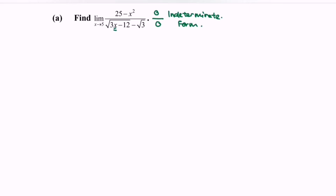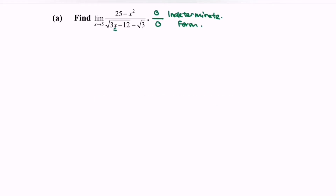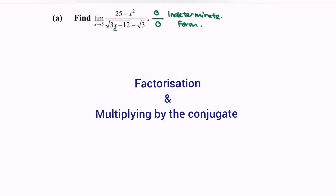There are three ways to solve these problems. Number 1: multiply by the conjugate. Number 2: factorization. Number 3: long division. My suggestion for this example would be to multiply by the conjugate and at the same time factorize the numerator.